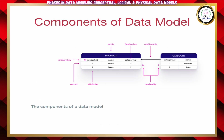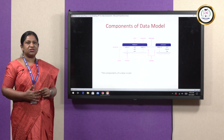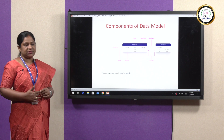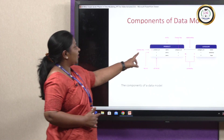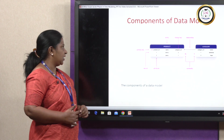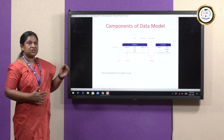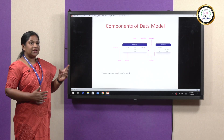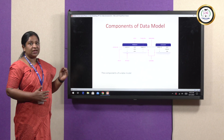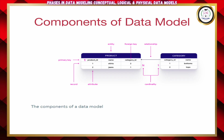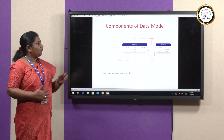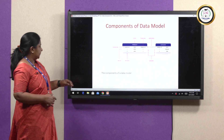Various components of a data model. In order to develop a data model, we have various components: entities, attributes, relationships, and various keys. As you can see here, product and category are our entities. The product entity has got certain attributes — key attributes and non-key attributes. Product ID is a key attribute, and category ID is also a key attribute.